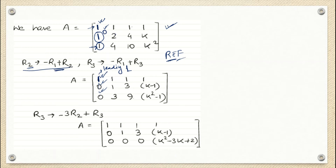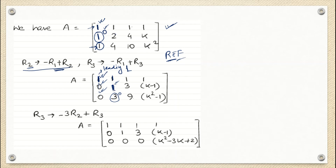My next focus is the first non-zero number of row 2, which is 1 — that is okay. For row 3, I need the element below the leading 1 of row 2 to be 0. The element at that position is currently 3, which should be 0 to put the matrix into row echelon form. I am not worried about numbers above the leading 1 — only the number below it must be 0.